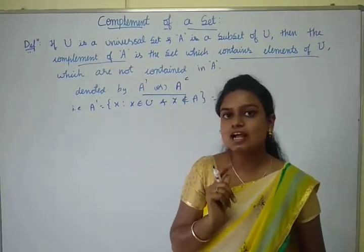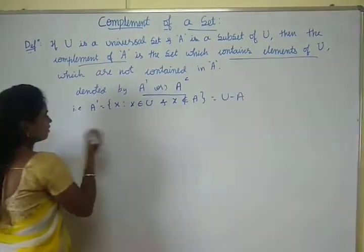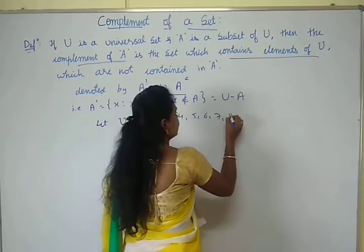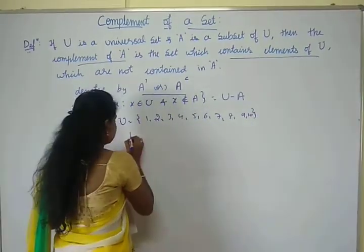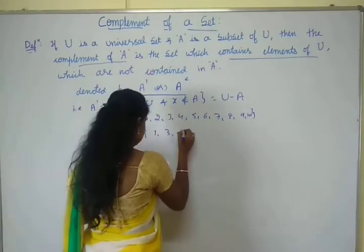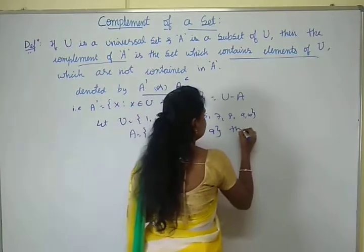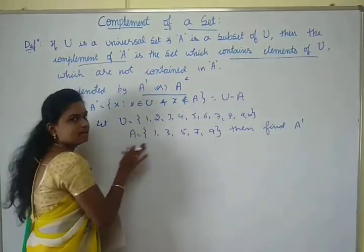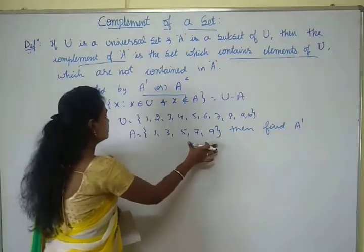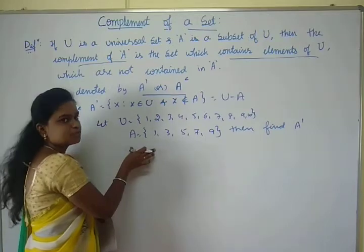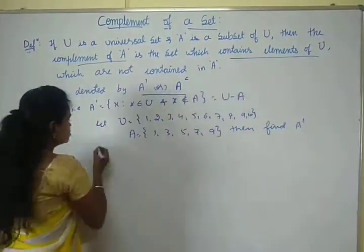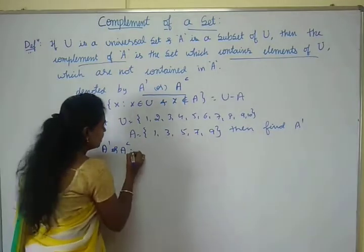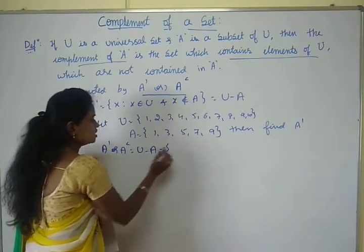I will give an example so you clearly understand the concept. Consider the universal set U = {1, 2, 3, 4, 5, 6, 7, 8, 9, 10} and set A = {1, 3, 5, 7, 9}. Find A complement. A complement, also written as A dash, is nothing but U minus A.